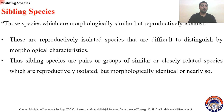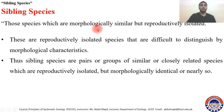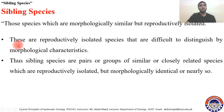Sibling species are those species which are morphologically similar but reproductively isolated. There are two aspects: number one, they are morphologically similar — if you look at their morphology they will look similar; but if you bring them close and into contact to interbreed, they will show isolation — they will not interbreed. Such species which are morphologically similar but do not interbreed, and are reproductively isolated from each other, are known as sibling species. They are very difficult to distinguish by morphological characteristics.